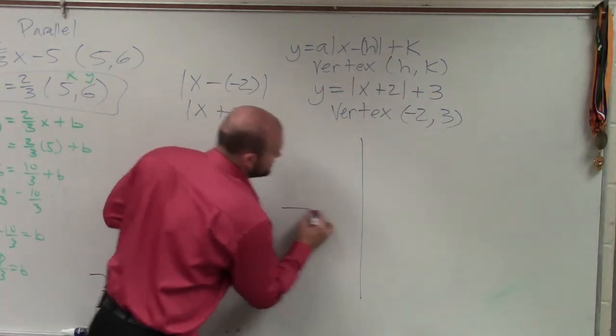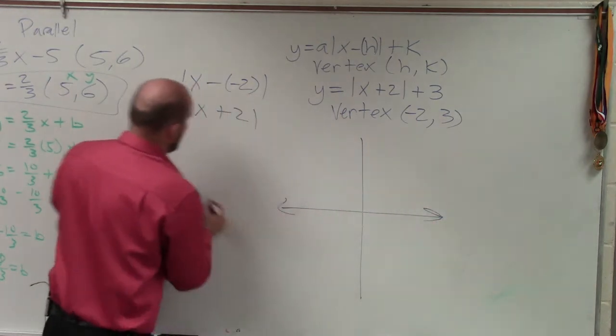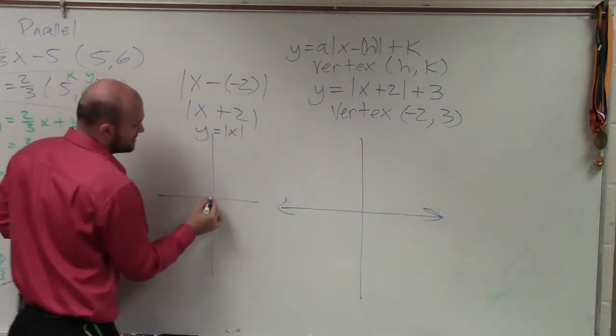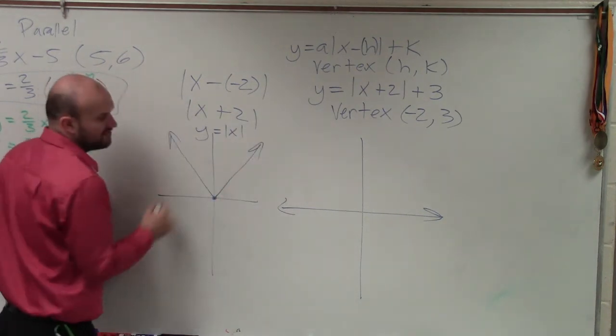Now, to graph this, remember the parent graph of our absolute value, y equals absolute value of x, is what we call the v graph. Just looks like a v.